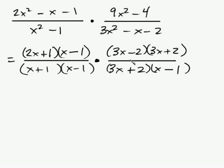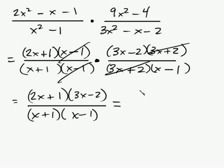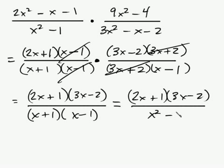So, now let's see what cancels out here. In this case, we have the x minus 1 canceled with the x minus 1. 3x plus 2 canceled with the 3x plus 2. And I'm left with 2x plus 1 times 3x minus 2. And that's all over x plus 1 times x minus 1.